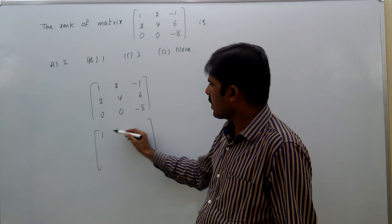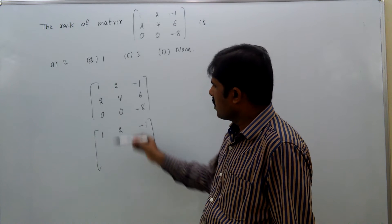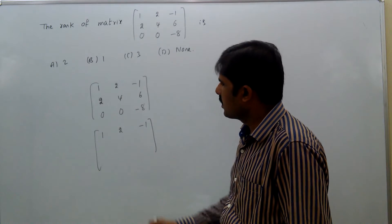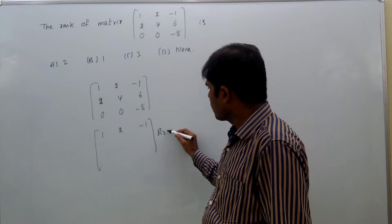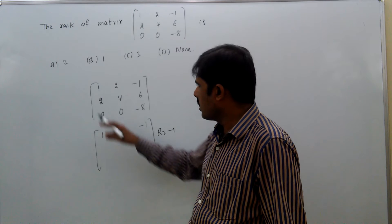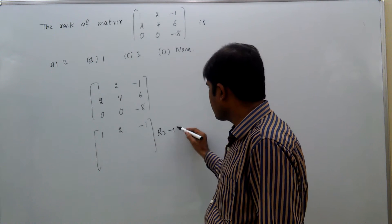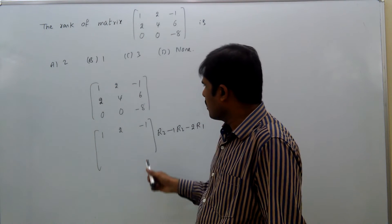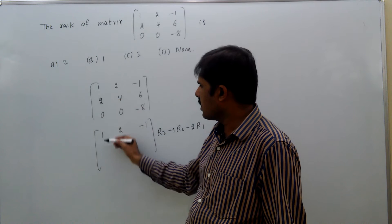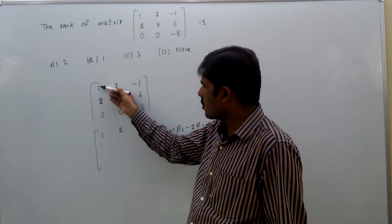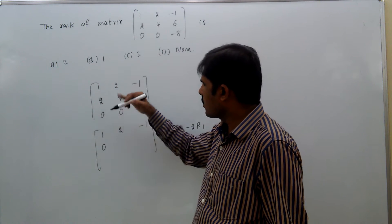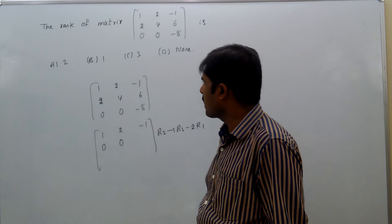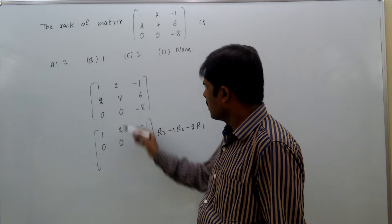Now, first row we will write as this: 1, 2, minus 1. Here, 2 is there. This place we want 0. That means, if we multiply first row by 2 and subtract it from the second row - R2 minus 2 times R1. By using this formula, we can make this element 0. That means, 2 minus 2 times 1 equals 0, 4 minus 2 times 2 equals 0, 6 minus 2 times minus 1 equals 8.